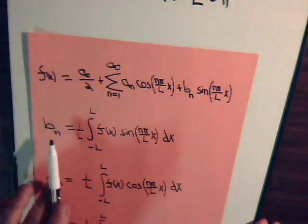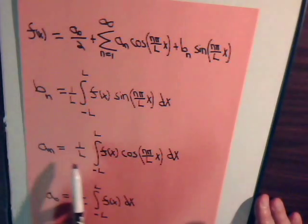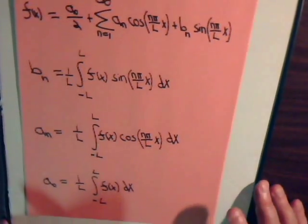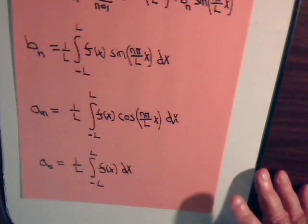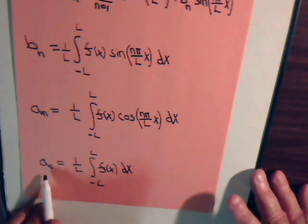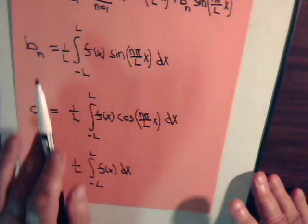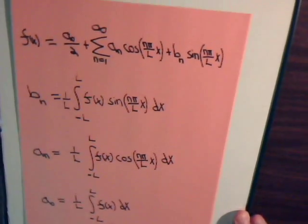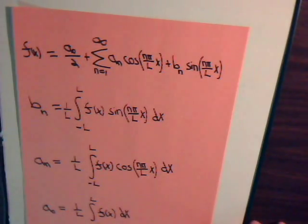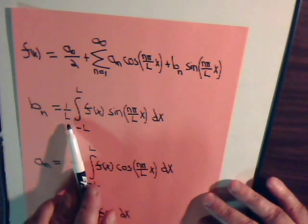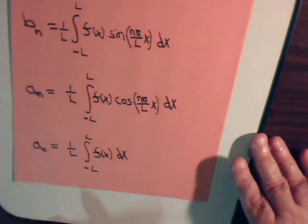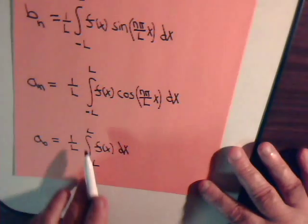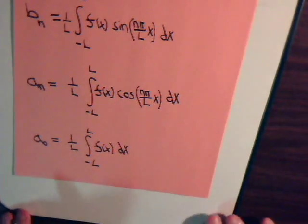Here then are the coefficients b sub n and a sub n, developed in the first video, and a sub 0 when n equals zero — which we can think of as the average of the function. We'll first determine a sub 0, then a sub n, then b sub n, and combine them into our formula. For this problem we go from minus pi to pi, with a factor of 1 over pi, and the integrands are e to the x times cosine of nx and e to the x times sine of nx respectively.